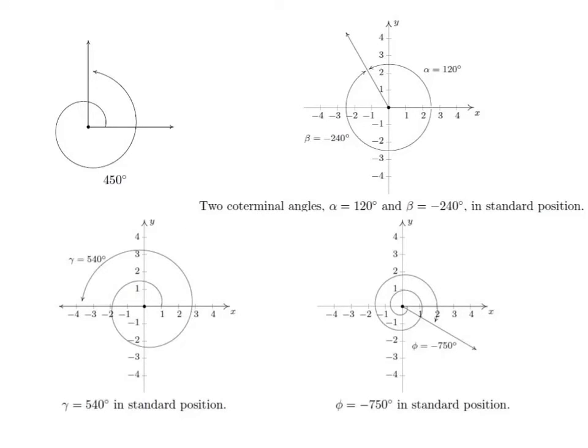When it comes to graphing angles, if the angle is more than 450 degrees, you will see the graph will go more than one time around, and then end on the terminal side.